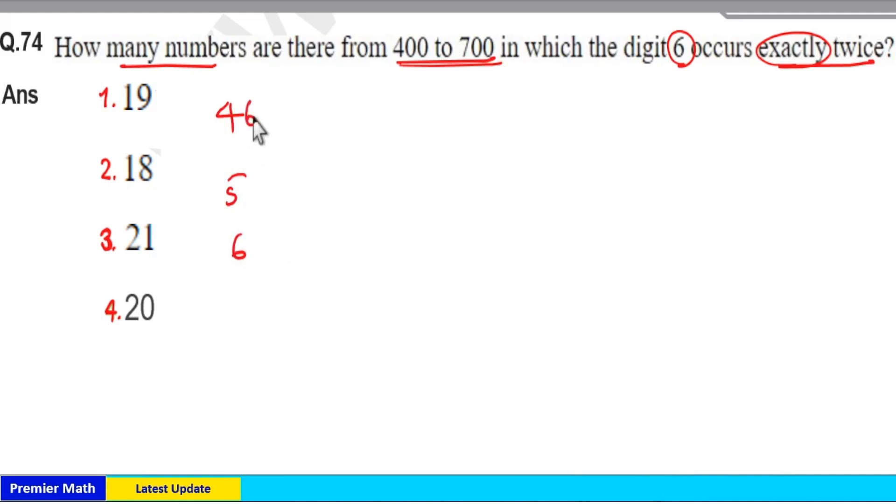If it starts with 4, only one number is possible: 466. If it starts with 5, only one number is possible: 566.